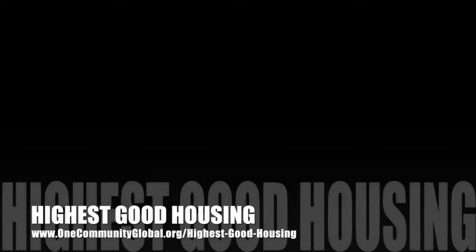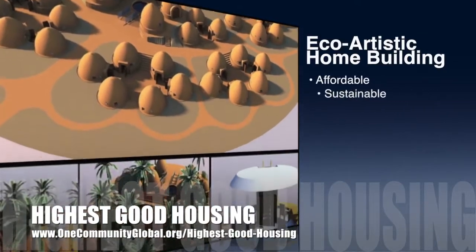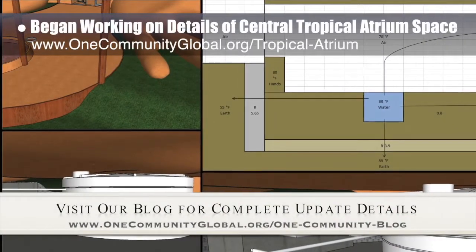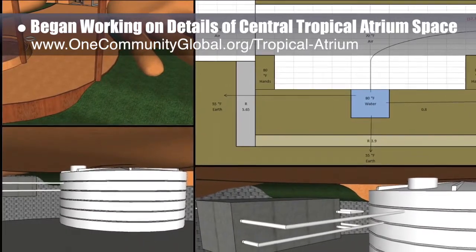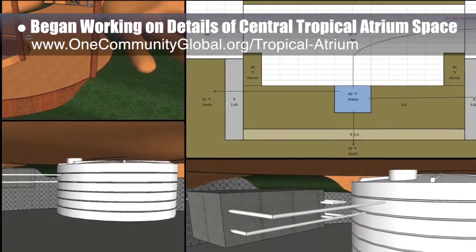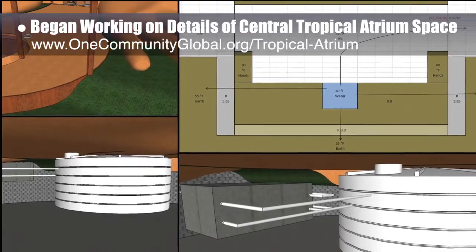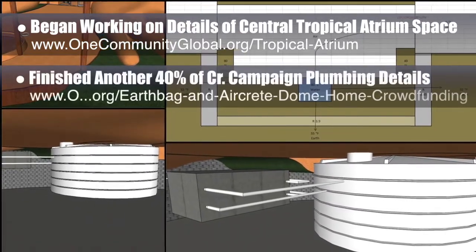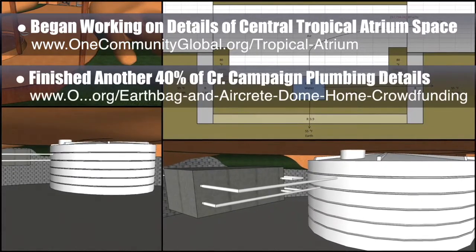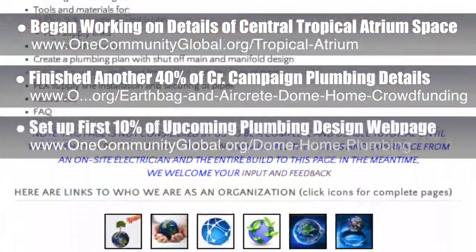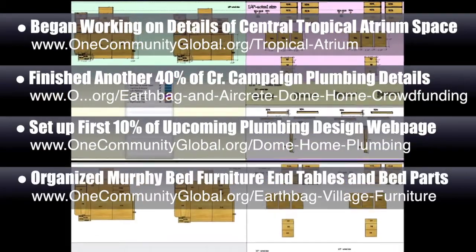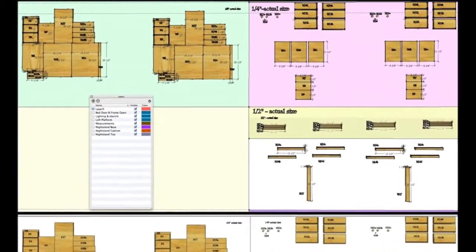One Community's approach to Highest Good Housing is eco-artistic home building that is affordable, sustainable, do-it-yourself duplicable, resource and space efficient, and consists of seven different sustainably constructed village models. This week the core team began working on the details of the central tropical atrium recreation space. This space will house the EarthBank Village water storage and recycle the village's used shower water heat. The four images shown here detail the water reservoir and how we'll be insulating the below-ground aspects of the structure to turn it into a giant thermal mass.